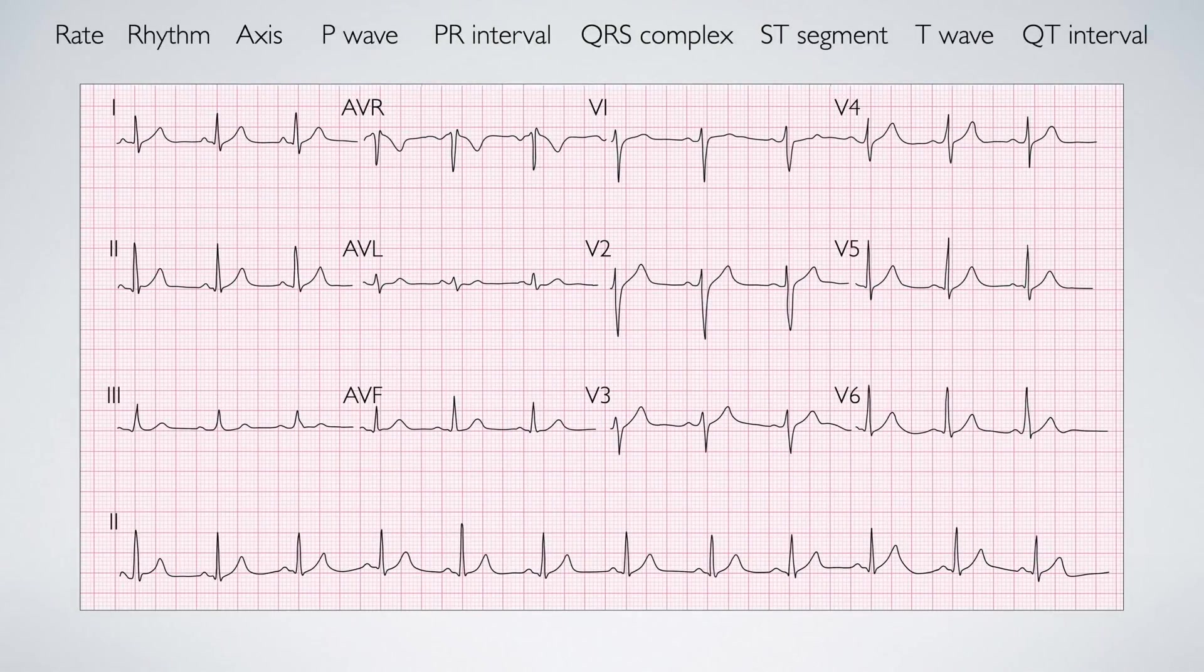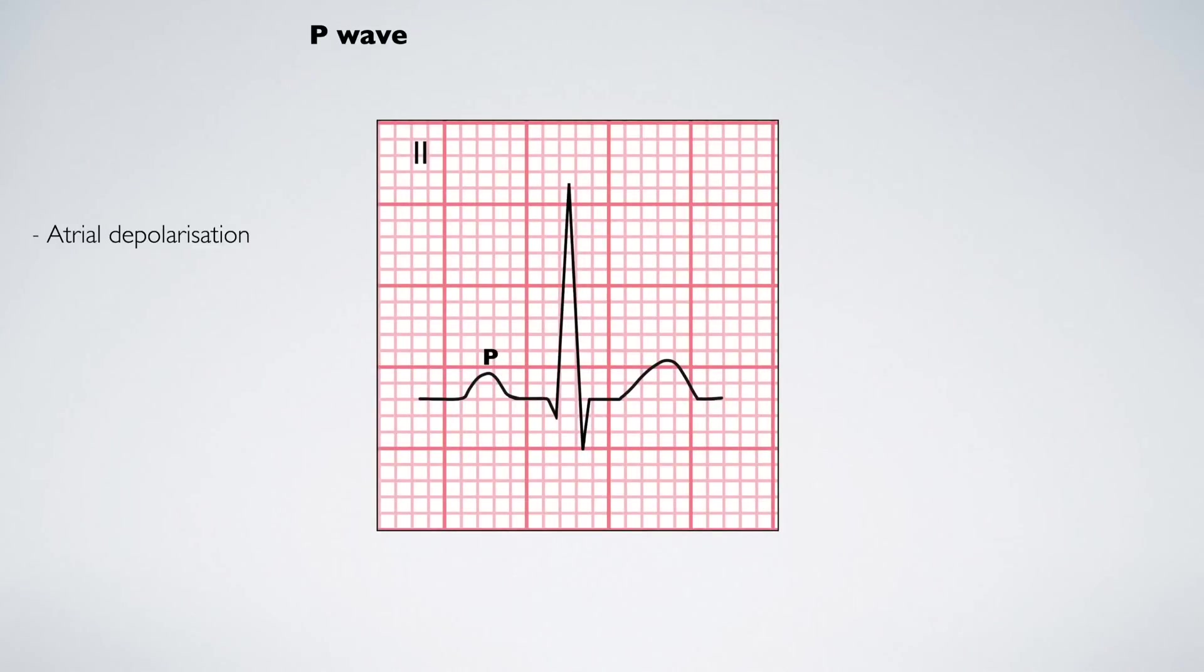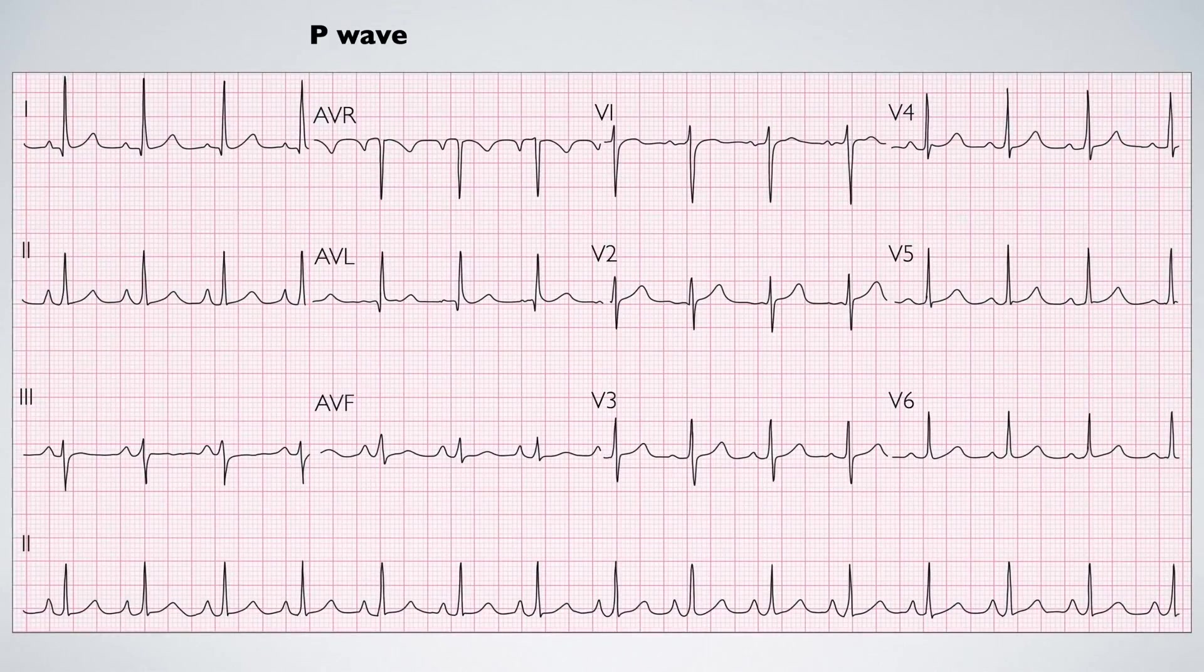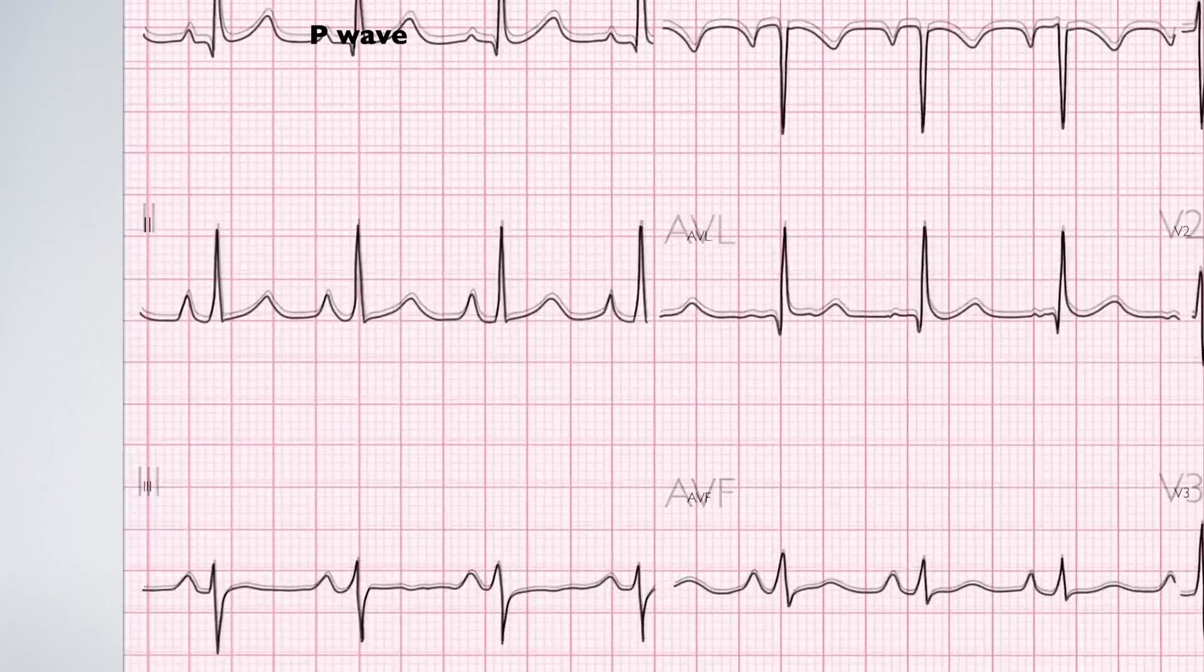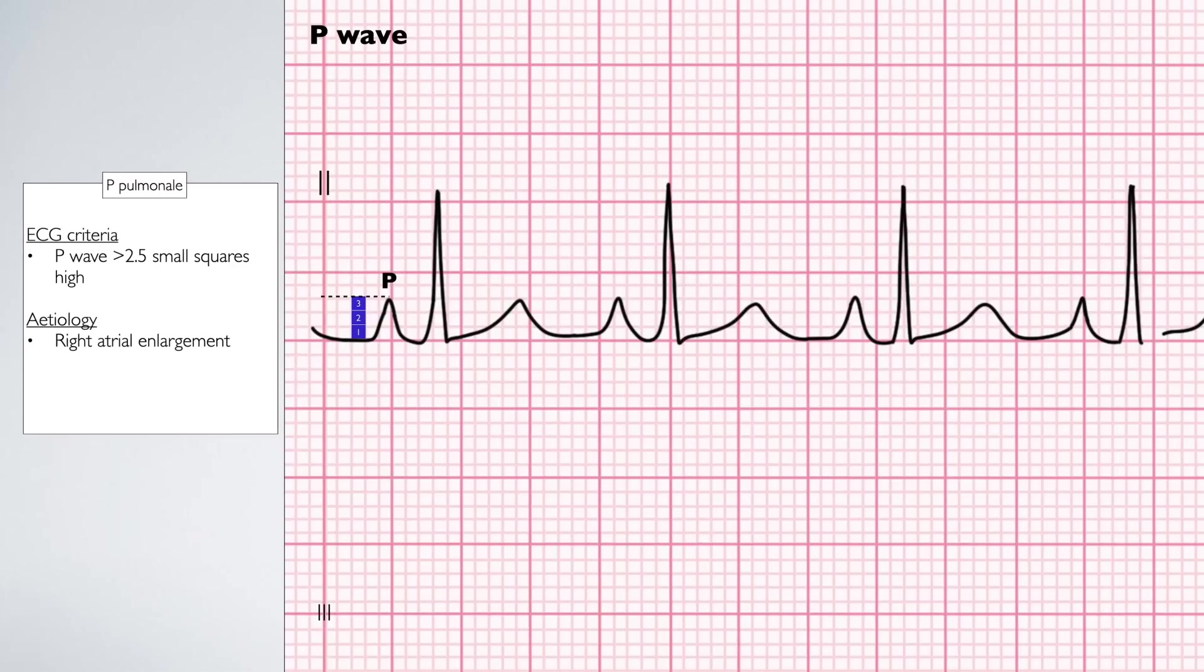Next we move on to assessment of the waves and intervals. Let's start with the P-waves. Observe the P-waves in lead 2. The P-waves represent atrial depolarization and should be less than 3 small squares wide and no more than 2.5 small squares tall. There are two presentations to look out for. The first is P-pulmonale, tall P-waves which represent right atrial enlargement. This should be suspected if the P-wave is greater than 2.5 small squares tall.